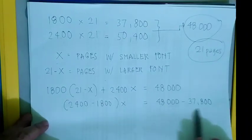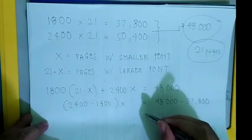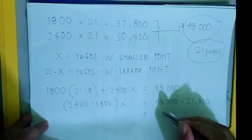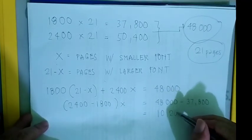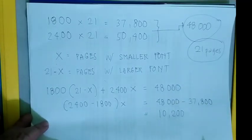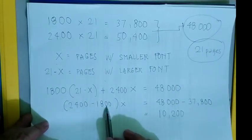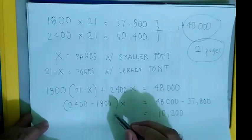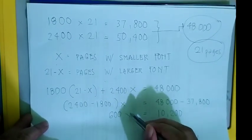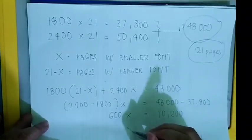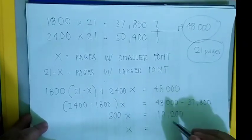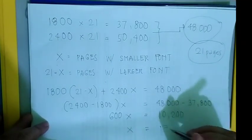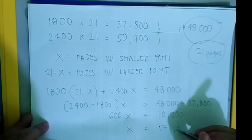So we have 600x equal to 48,000 minus 37,800, which equals 10,200. Dividing both sides by 600 gives x equal to 17 pages.